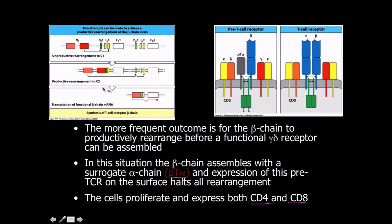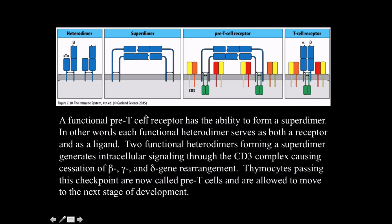These pictures reiterate with the co-receptors of the CD3. This rearrangement has multiple attempts that can be made and transcription of functional messenger RNA. A functional pre-T cell receptor has the ability to form a superdimer. In other words, each functional heterodimer serves both as a receptor and as a ligand. Two functional heterodimers forming a superdimer generates intracellular signaling through the CD3 complex, causing beta, gamma, and delta gene rearrangement to stop. The thymocytes passing this checkpoint are now called pre-T cells and are allowed to move to the next stage of development.